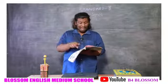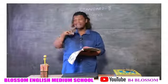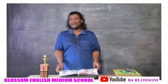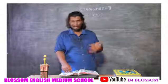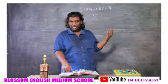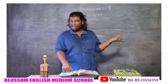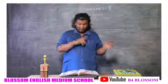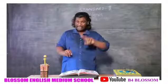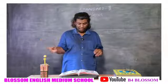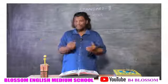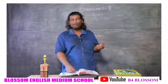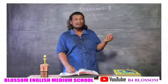Examples of climbers and creepers include the pea plant and pumpkin plant, which live for only a few months. Plants like the money plant and grapevine live for a few years.